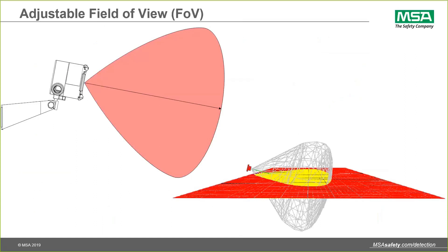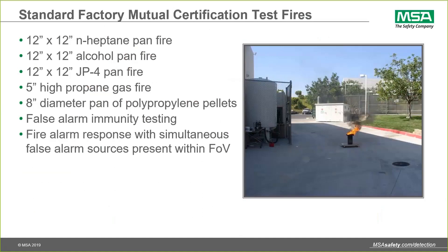It's important from an end-user perspective to be confident that the flame detector you're installing is capable of seeing the fire you expect. Factory Mutual provides certification on performance to different fire types — including heptane, alcohol, JP4 kerosene-based jet fuel, propane, methane, propylene, and Class A solid material fires. They also perform false alarm immunity testing and fire alarm response testing with false alarms simultaneously present in the field of view, to ensure the detector delivers the performance claimed by the manufacturer.